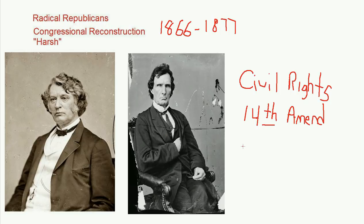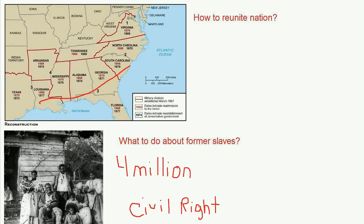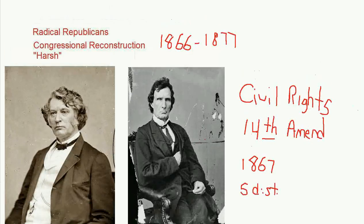Congress went beyond civil rights and in 1867 began military reconstruction of the South through the Military Reconstruction Act. The South was divided into five districts, each administered by military leaders. The civilian governments the South had tried to create were abolished, and the military was in charge until the Southern states could reorganize and grant rights to African Americans and ensure equality for all people. As a result, in the election of 1868 — the first time integrated governments were elected in the South — both poor whites and African Americans gained voting rights and the ability to run for public office.